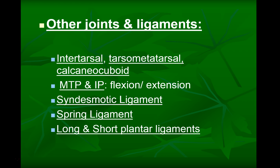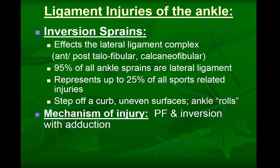Ankle sprains are the most common sports-type injury, with about 95% occurring to the lateral complex — the anterior talofibular being most common. The posterior talofibular and calcaneofibular can also be involved. Common mechanisms include stepping off a curb, missing a step, or stepping in a hole, causing the ankle to roll into inversion and plantarflexion, with the forefoot adducted.